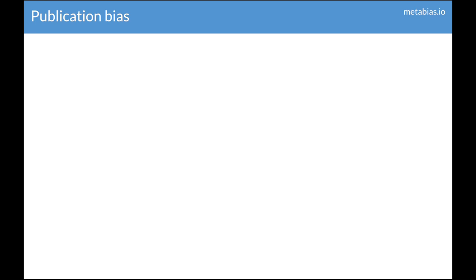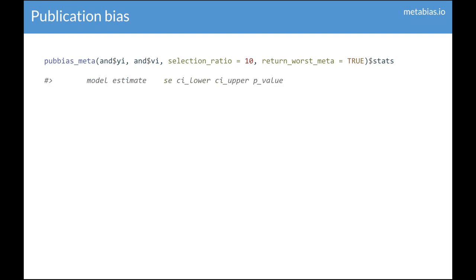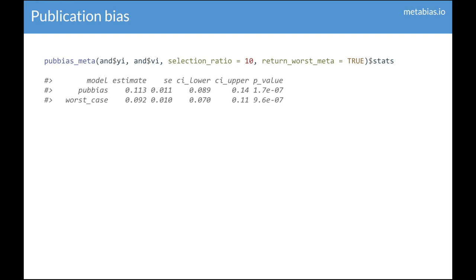Under the same model of publication bias, we can also look at the complementary analysis of taking some fixed selection ratio — let's say 10 — and seeing how much the estimate would be changed if that selection ratio were the case. For a selection ratio of 10, the point estimate would decrease from the original 0.16 to 0.11. In the worst case, if affirmative studies were infinitely more likely to be published than non-affirmative studies, the estimate decreases to 0.09.